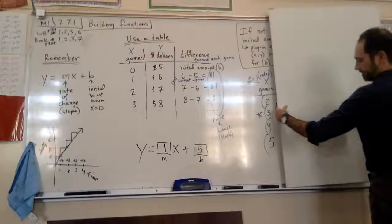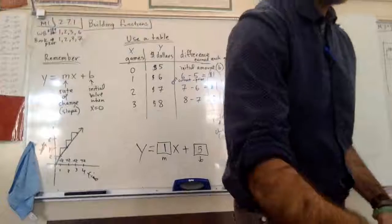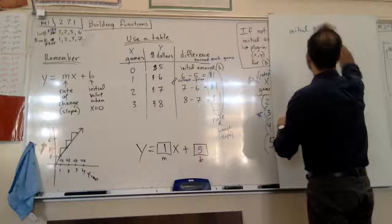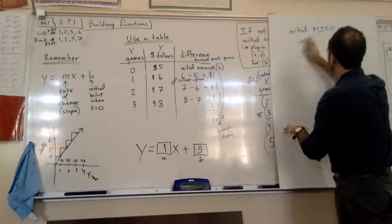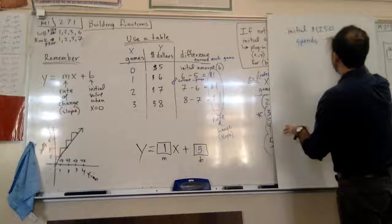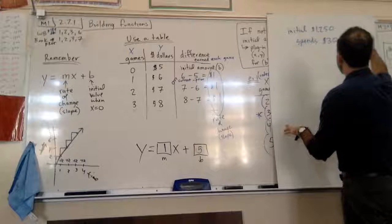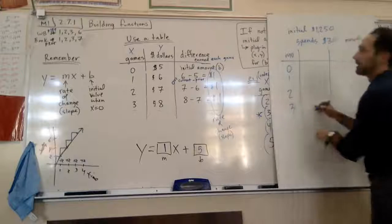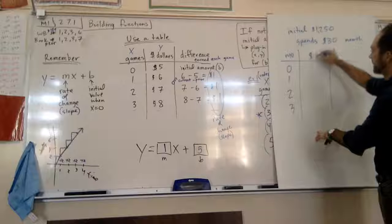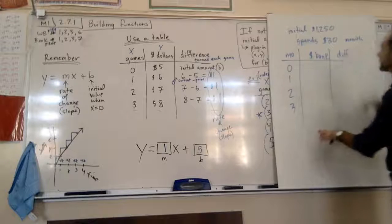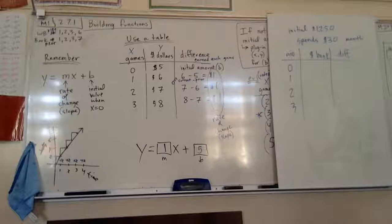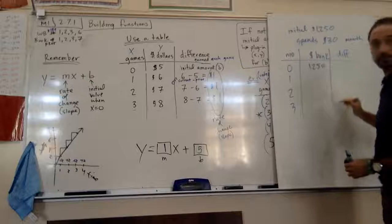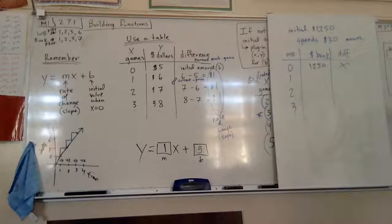Spend 30 bucks per month. Okay. Let's make our table. So, we have, instead of games, we're just talking about months because she's taking out some money. One, two, three. Let's call this the money in the bank. It's going to be our difference. Alright. After zero months, how much does she have? After zero months, Kaden? One thousand two hundred and fifty. Perfect.